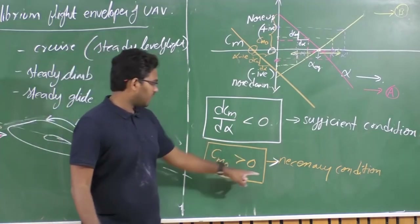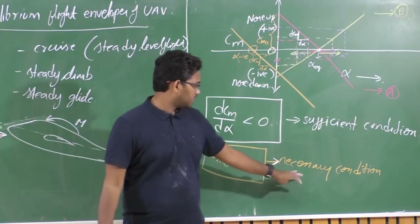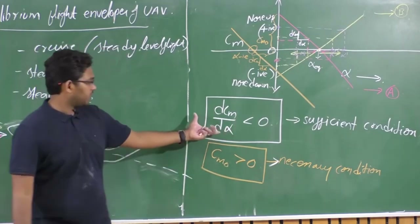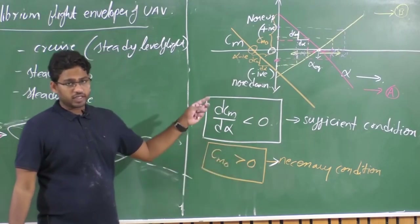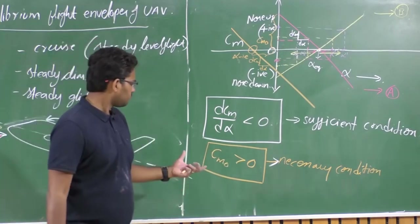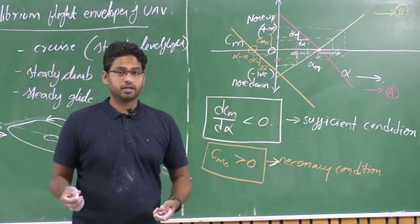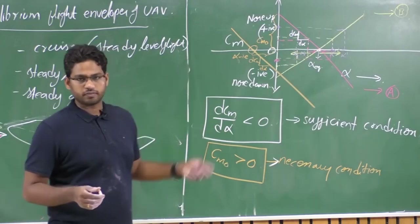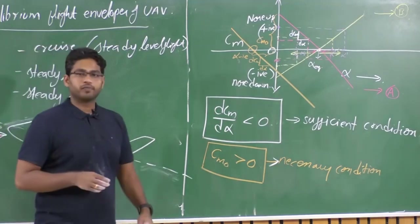To summarize: Cm0 > 0 is the necessary condition and CMα < 0 is the sufficient condition for longitudinal static stability. For aircraft with CMα > 0 and Cm0 > 0, we can still fly them with an onboard controller. But if CMα < 0 with Cm0 < 0, you must trim at negative angles of attack — reaching towards CL = 0, meaning no lift — and the aircraft cannot be flown. See you soon. Thank you.